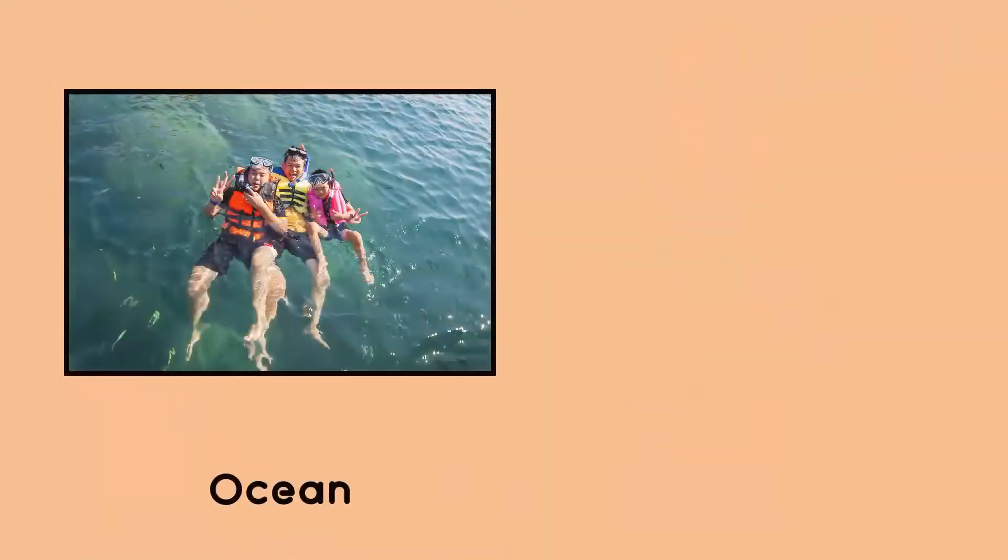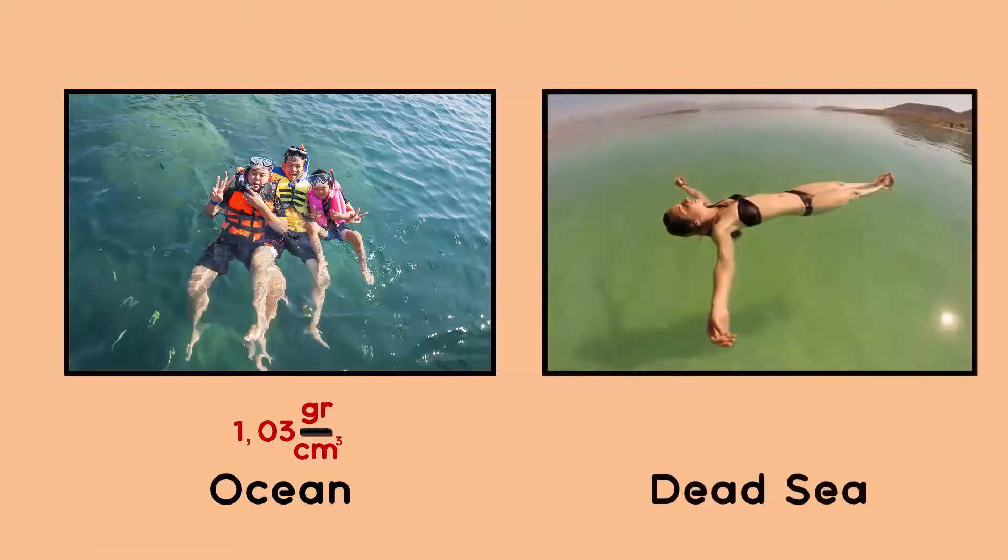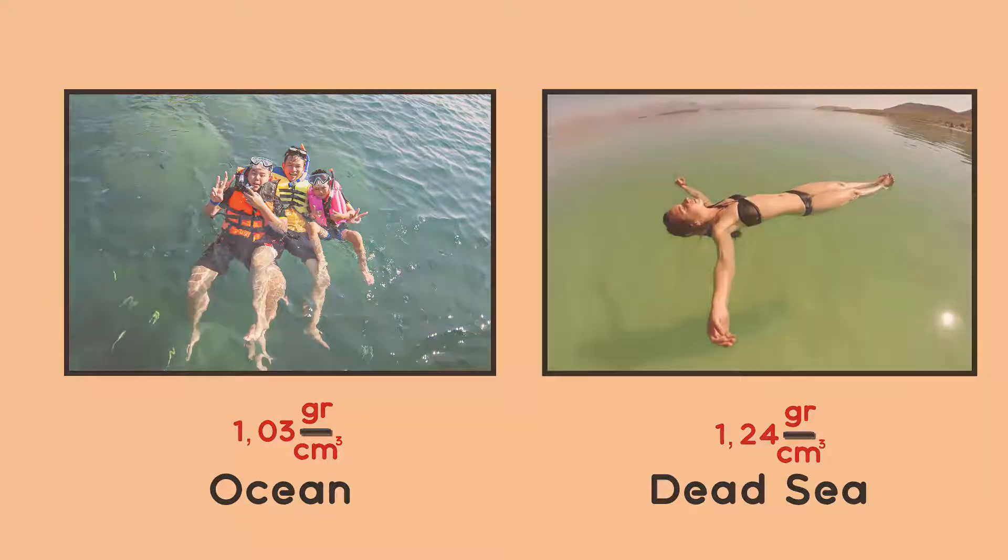As an example, the density of our ocean water is around 1.03, while Dead Sea water is 1.24 grams per cubic centimeter. That's why you wouldn't need the floater to relax there.